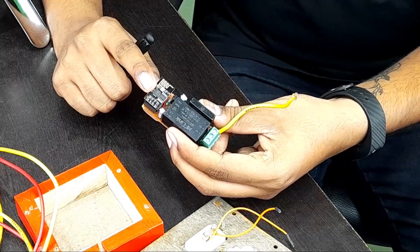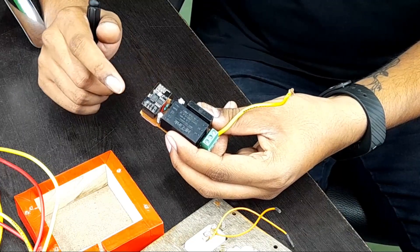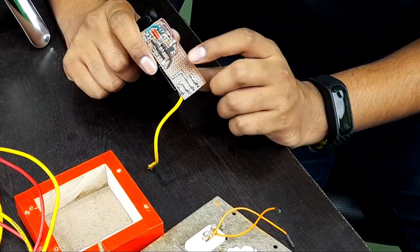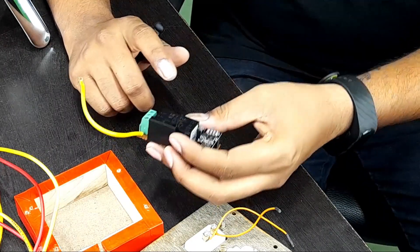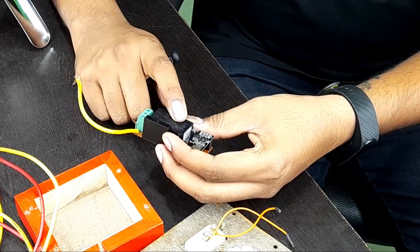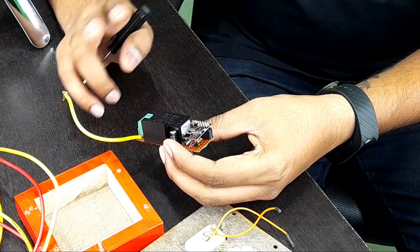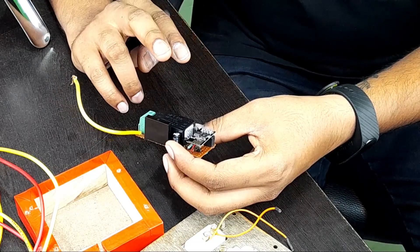As you know, ESP is a 3.3 volt microcontroller, so we have an AMS1117 regulator at the back side which steps down the five volts to 3.3 volts. We have two filtering capacitors, both on the input side and output side of the regulator, to filter any noises or ripples.